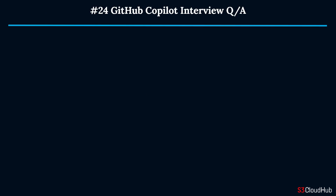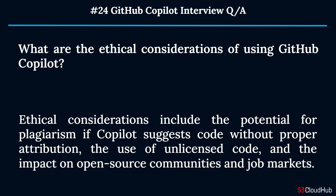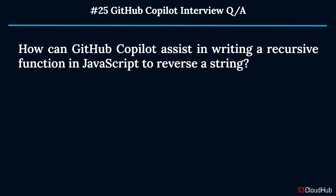Question twenty-four: What are the ethical considerations of using GitHub Copilot? Ethical considerations include the potential for plagiarism if Copilot suggests code without proper attribution, the use of unlicensed code, and the impact on open source communities and job markets.